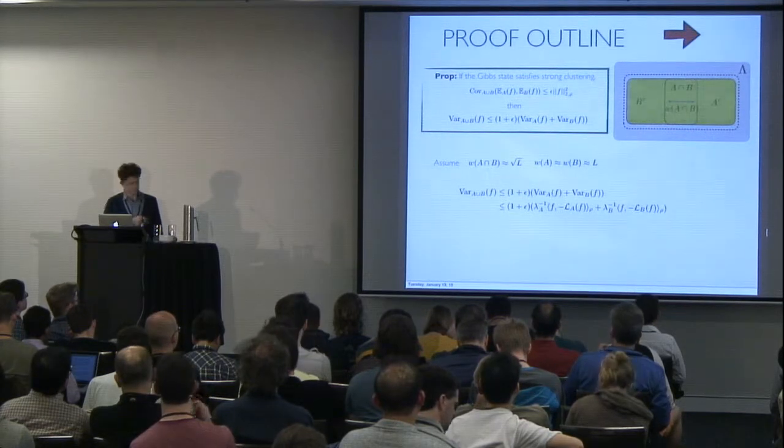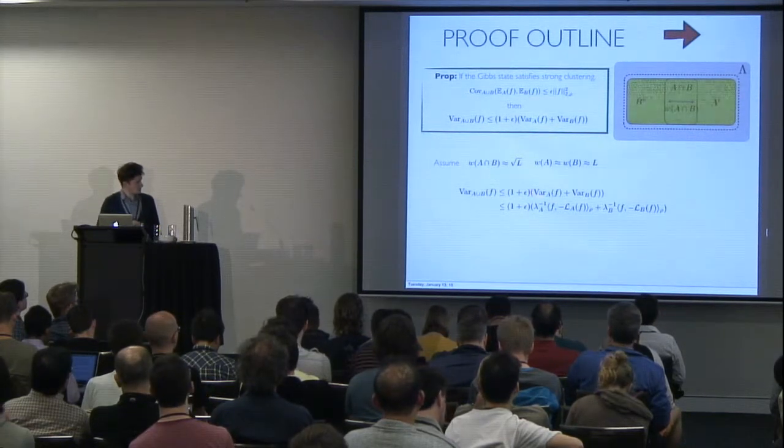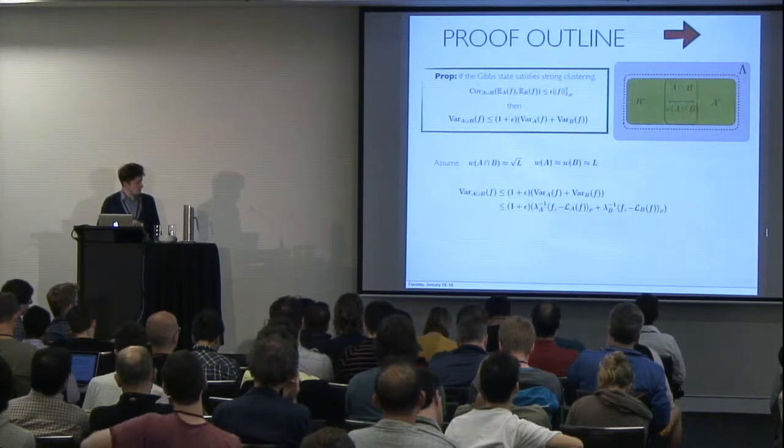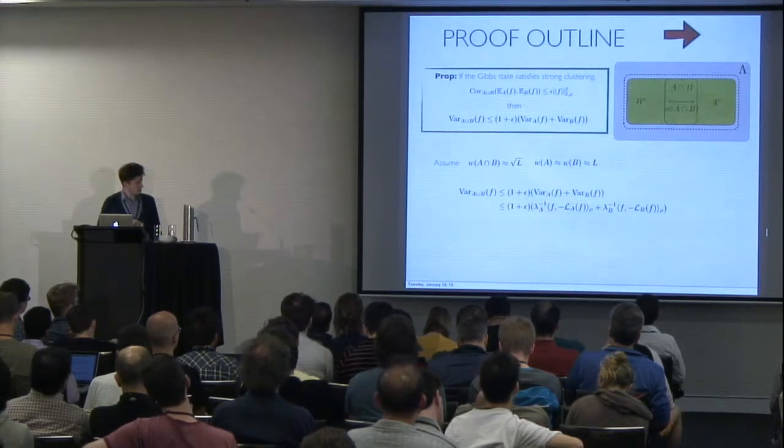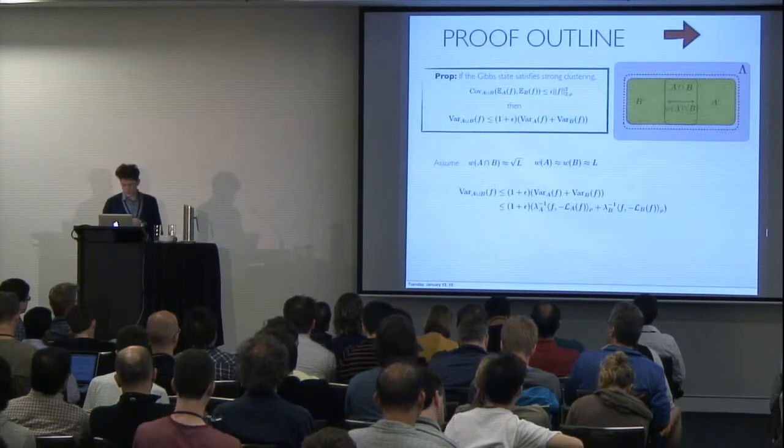So we start from this expression of the variance. And from the definition of the spectral gap, we can replace, we can upper bound the variance by one over the spectral gap times this term here called the Dirichlet form. We do this for both the B part and the A part.